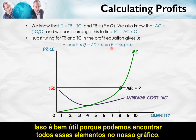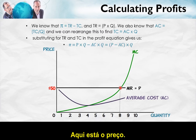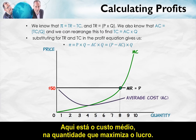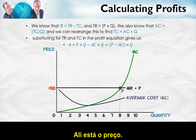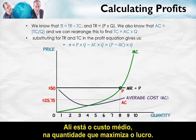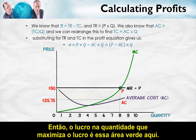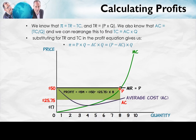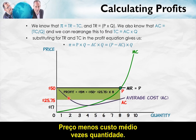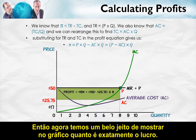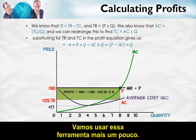That's nice because we can find all of these elements on our diagram. Here's the price, and here's the average cost at the profit maximizing quantity. Profit at the profit maximizing quantity is this green area — price minus average cost times quantity. So now we have a nice way of showing in a diagram exactly how much profit is. Let's use this tool some more.